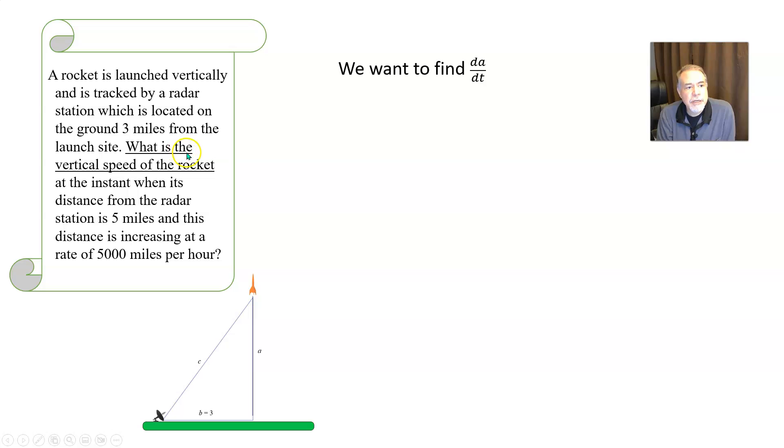The question here is, what is the vertical speed of the rocket? That is, how fast is this distance from the ground up to where the rocket is now, how fast is that distance changing? So we want to find the rate of change of a here, which means we want to find da/dt, the rate of change of a with respect to time.